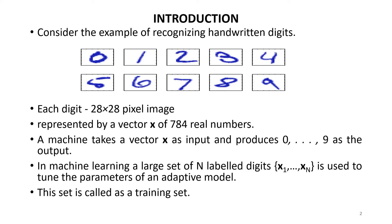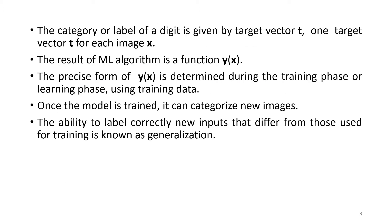In machine learning, a large set of n labeled digits is used to tune the parameters of an adaptive model. This set is called a training set. The category or label of a digit is given by the target vector t, and there will be one target vector t for every image x. The result of a ML algorithm is a function y(x). The precise form of y(x) is obtained during the training phase or learning phase using the training data.